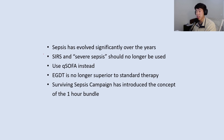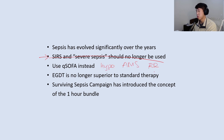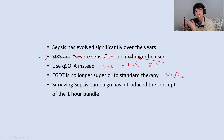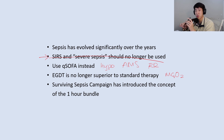Key points to close out: Sepsis has evolved significantly over the years. The terms SIRS and severe sepsis should no longer be used — we should be using qSOFA instead. Early goal-directed therapy is no longer superior to standard therapy, so there's no need to measure mixed venous oxygen saturation. The Surviving Sepsis Campaign has introduced the one-hour bundle. I hope this clarified the history of sepsis, the evolving definitions, and why we now use qSOFA. Thanks for watching!